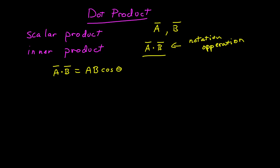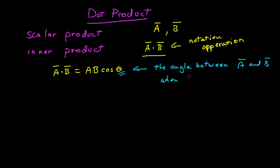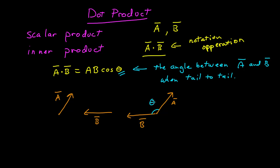We have to be really careful that we get the right angle. This angle is defined as the angle between vector a and b when tail to tail. If here's a and here's b, this is the angle between them when they're tail to tail. This is the angle defined as theta when we calculate the dot product.